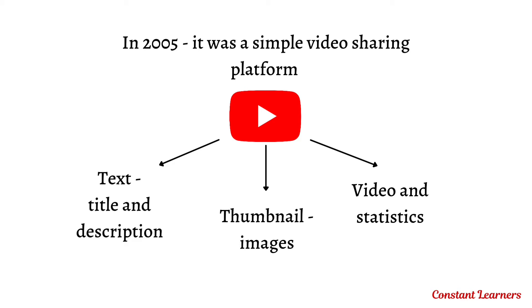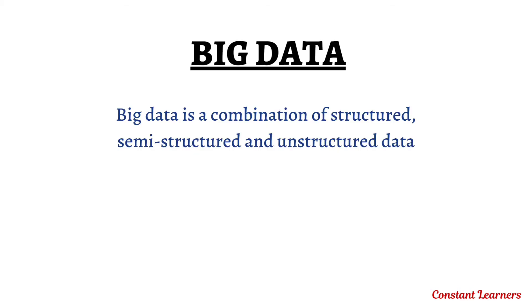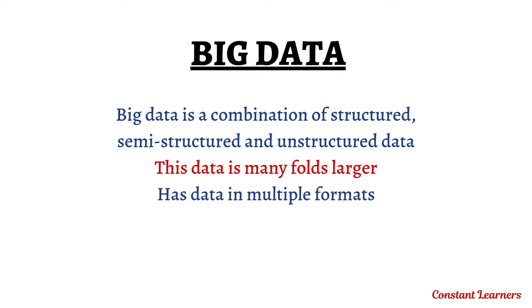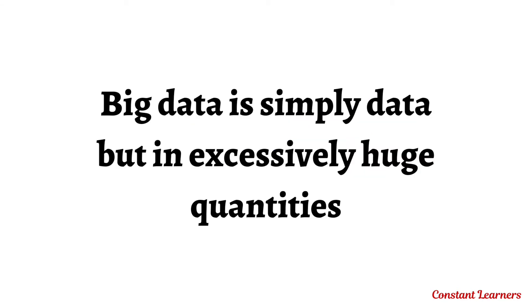So, to answer our question: big data is a combination of structured, semi-structured, and unstructured data. This data is many folds larger than what was generated ages ago, and it exists in multiple formats. In short, big data is simply data but in excessively huge quantities — it relates to its name: big data means huge amounts of data.